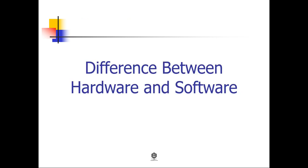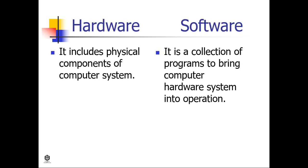Now let us proceed to the discussion about the differences between hardware and software. Hardware includes physical components of a computer system, while software is a collection of programs to bring the computer hardware system into operation.